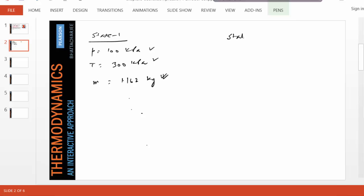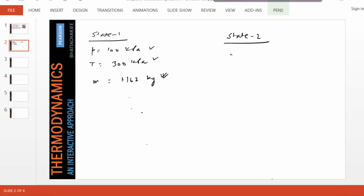And state two, what was given was the volume, was one-tenth, V2 was equal to V1 over 10. Of course, mass remains the same.